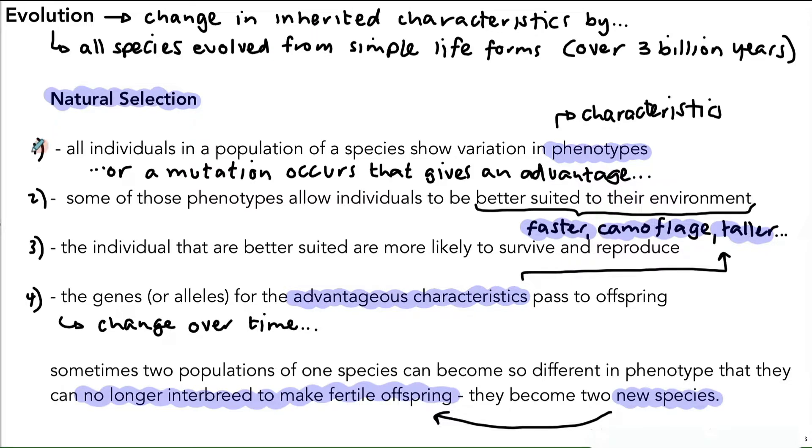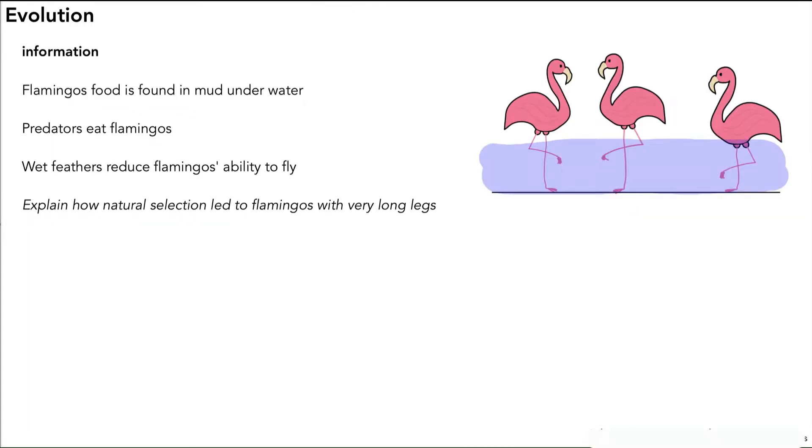So there's our four key points that we need to know and remember and be able to apply, but this is in a very general way. What we need to do is apply it to an example. Here we've got an example that talks about the evolution of flamingos. We've got some information about flamingos and a diagram. Flamingos' food is found in mud underwater. Predators eat flamingos, and wet feathers reduce flamingos' ability to fly. The question is asking you for three marks how natural selection led to flamingos with very long legs.